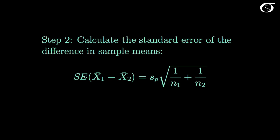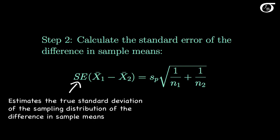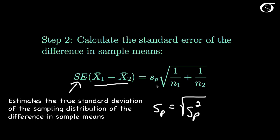Next we need the standard error of the difference in sample means. The standard error of x1-bar minus x2-bar estimates the true standard deviation of the sampling distribution of the difference x1-bar minus x2-bar. Here sp is simply the square root of the pooled sample variance, the square root of sp squared, and we multiply that by the square root of 1 over n1 plus 1 over n2.